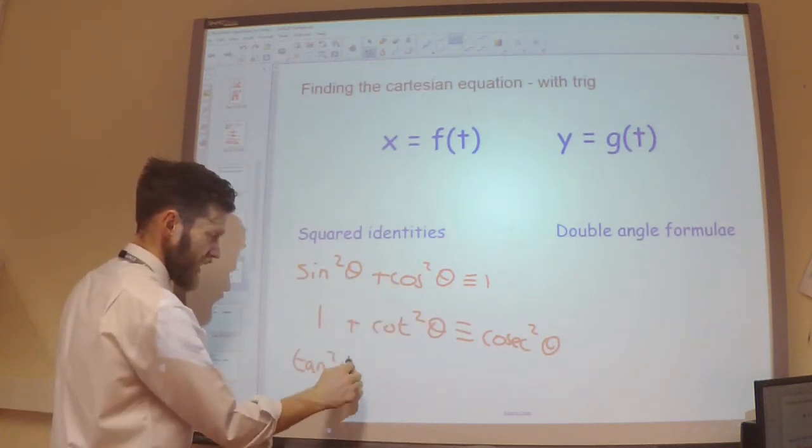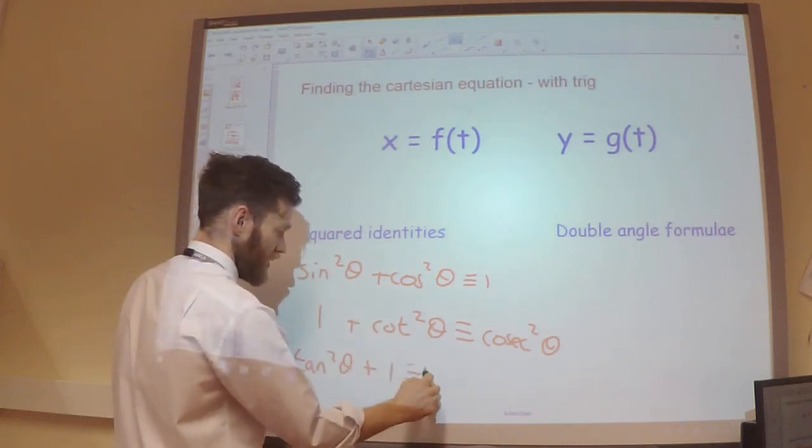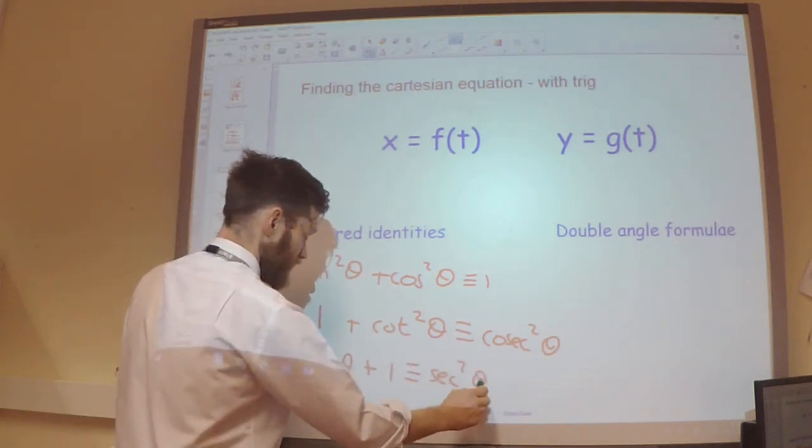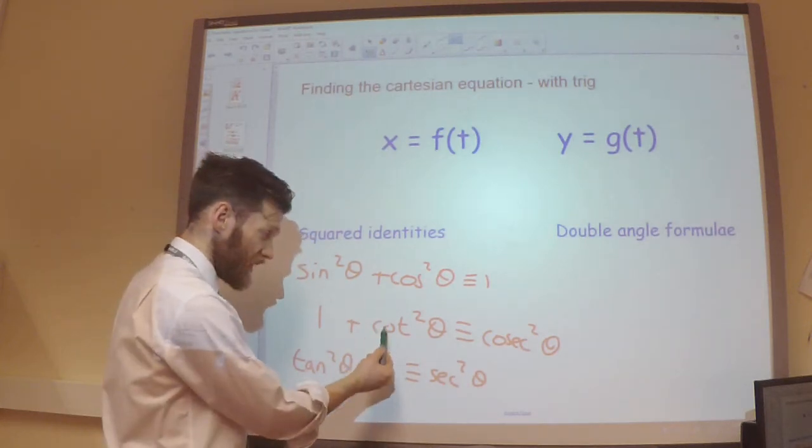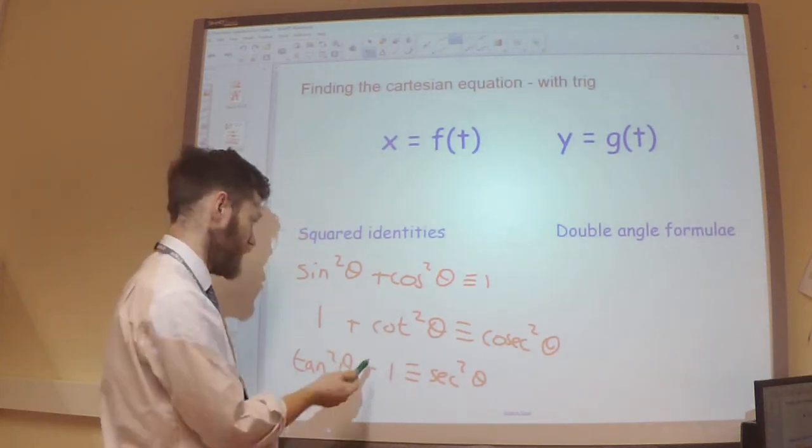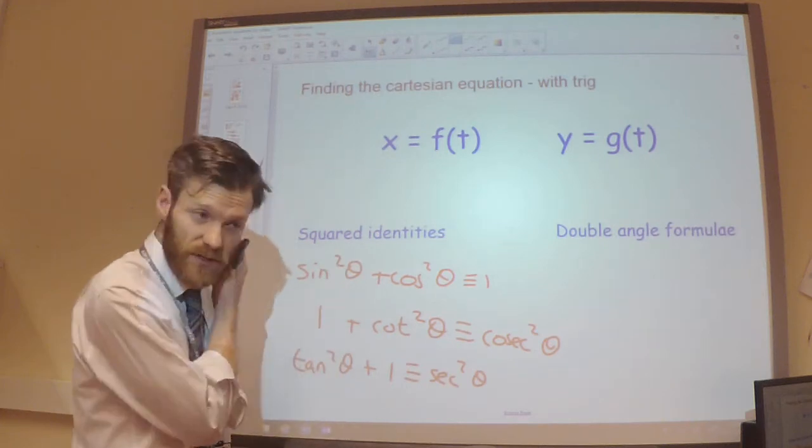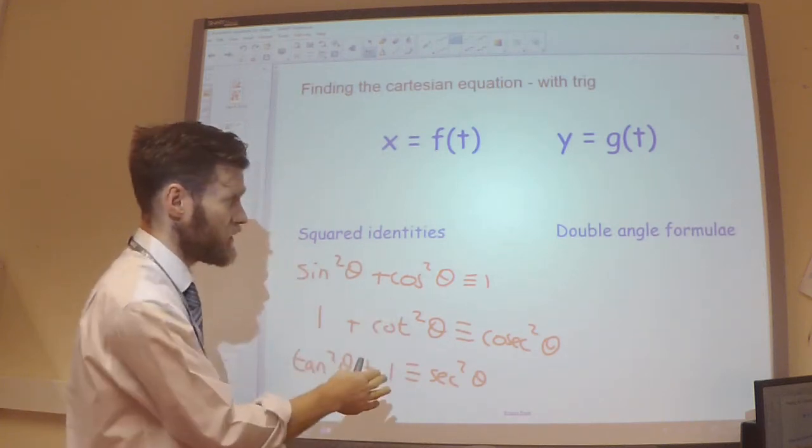And I also know dividing each term through by cos squared, I'm going to get tan squared plus 1 is equal to sec squared. So this can help me to link tan and sec together. This can help me to link cot and cosec together. And as I said this can help me link the sine and cos together. So they're really useful.